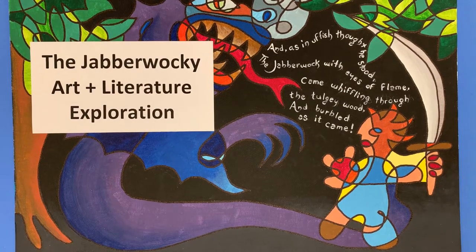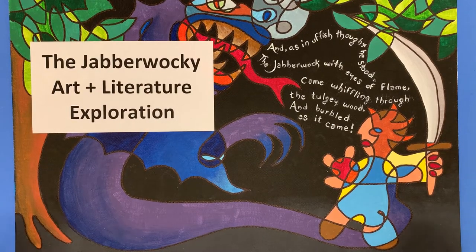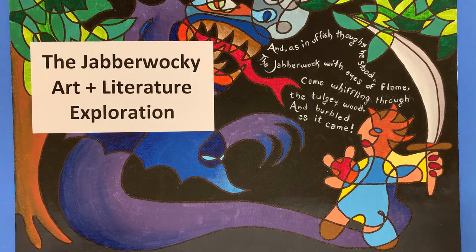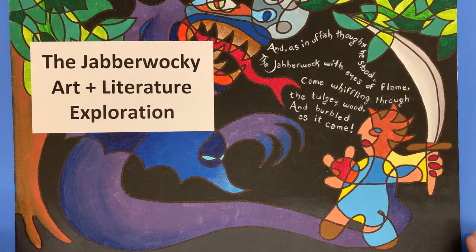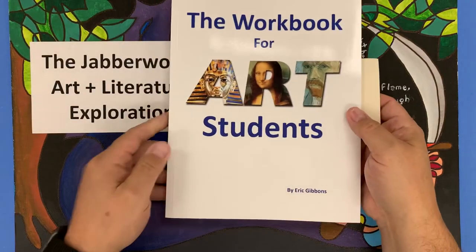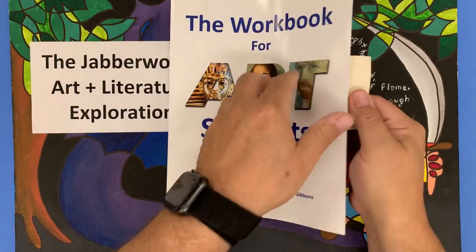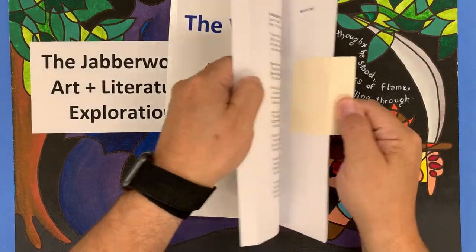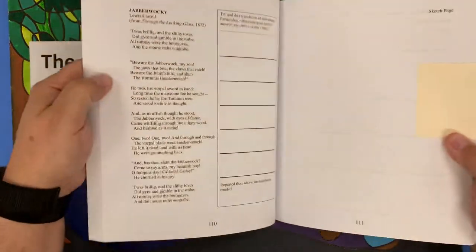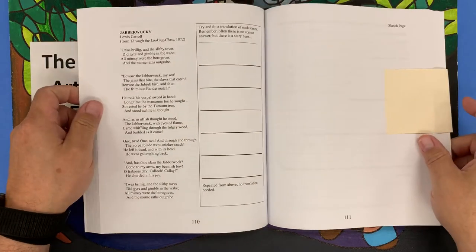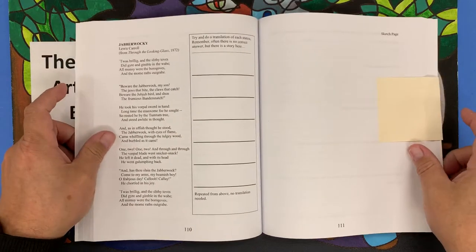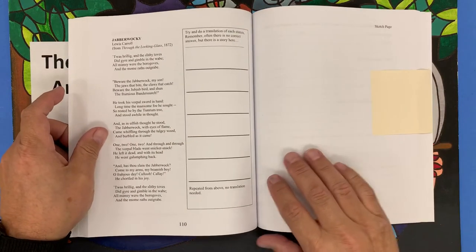The Jabberwocky is a great poem by Lewis Carroll that can be a great starting point for doing all sorts of explorations with students. In the workbook for art students I have the poem in there, but it's easy to find on the internet and print it out for your students.